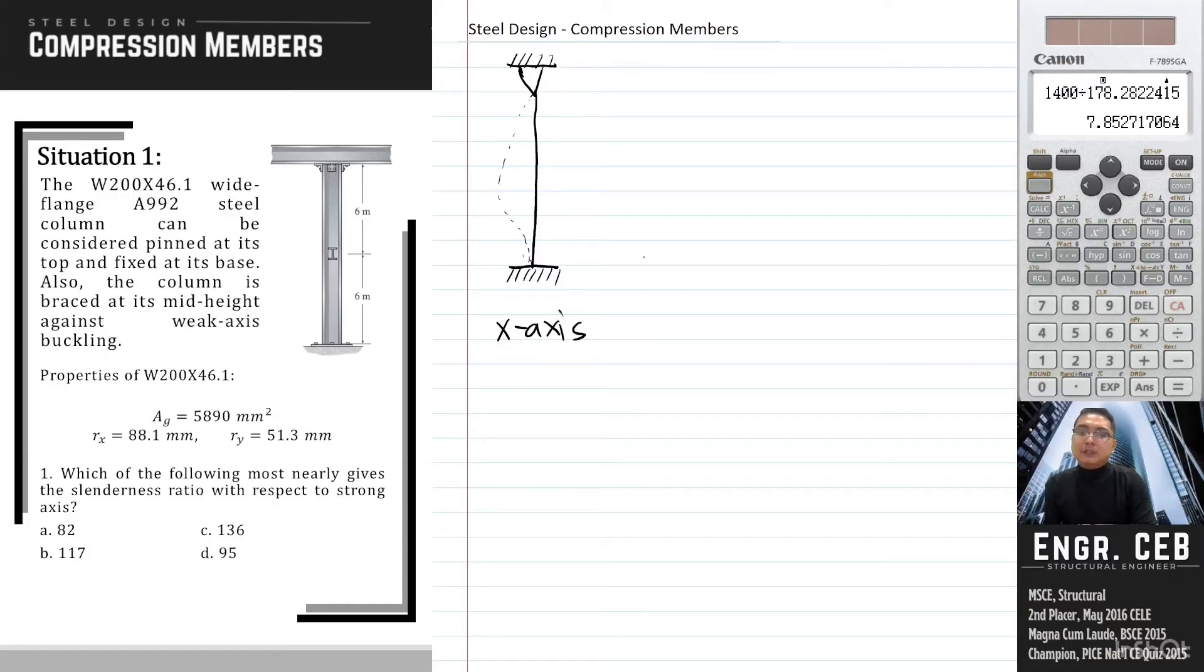For the weak direction, we will have the same support condition. But according to the problem, there is a bracing at its mid-height. Due to the bracing at mid-height, this point will be considered as pin. So this is now 6 meters and 6 meters. This is 12 meters.